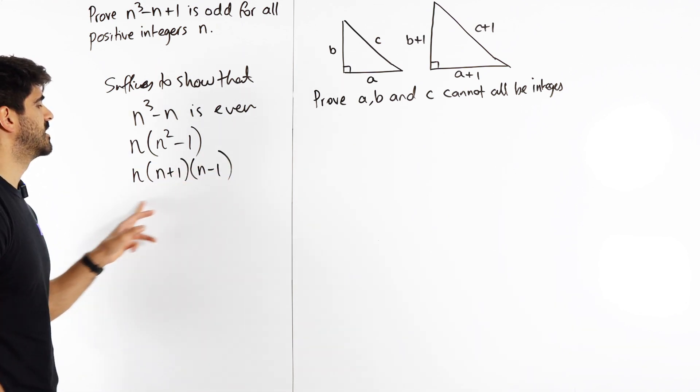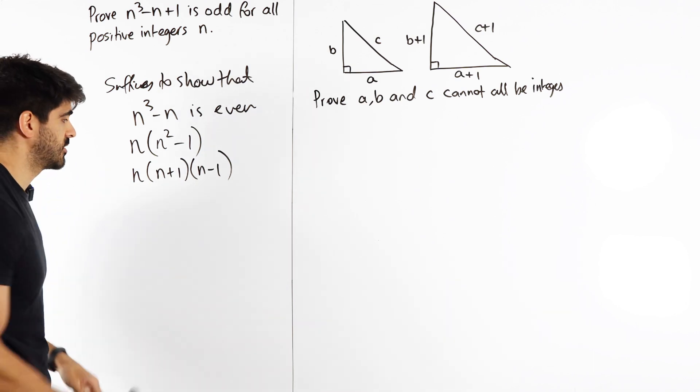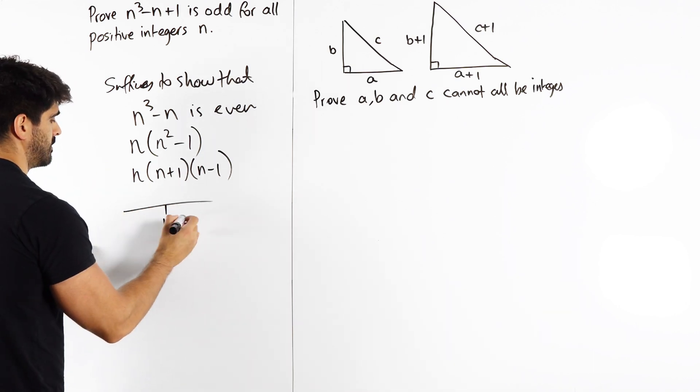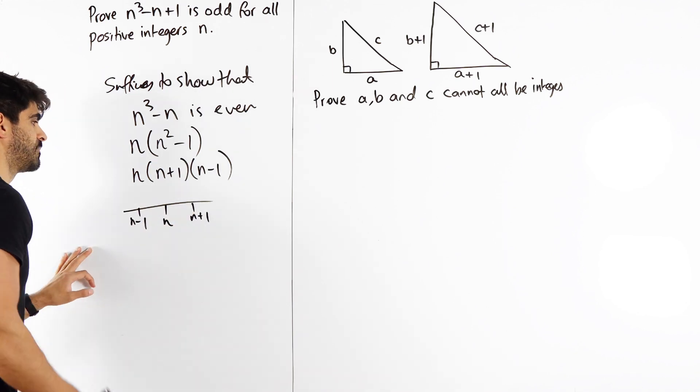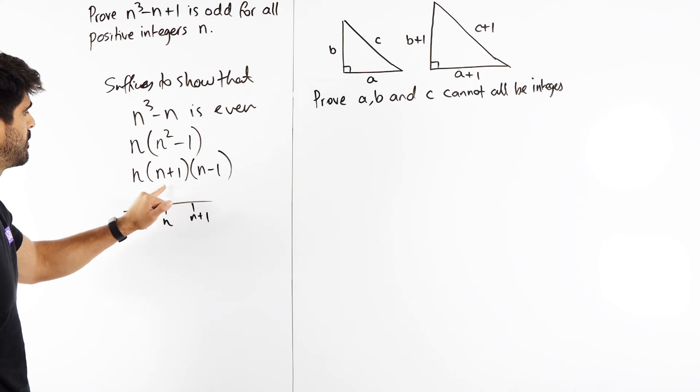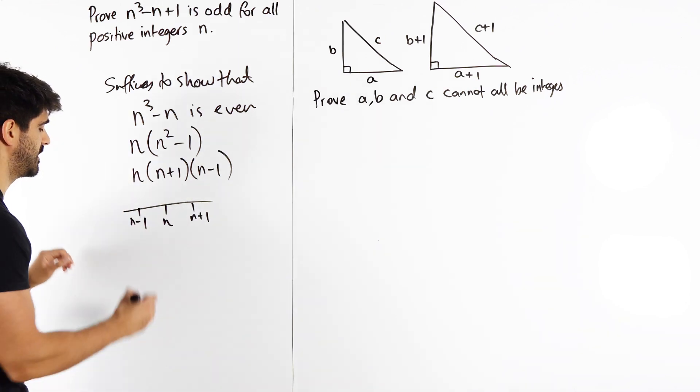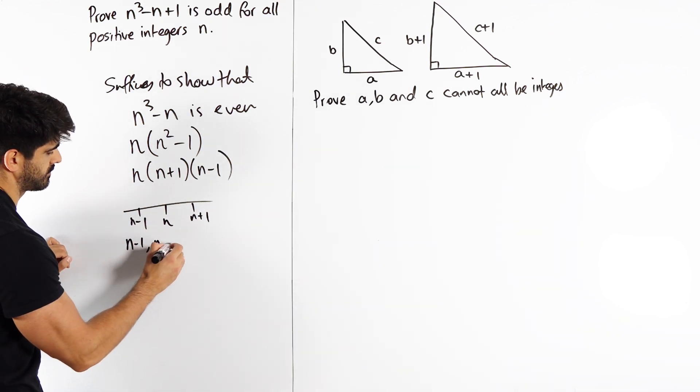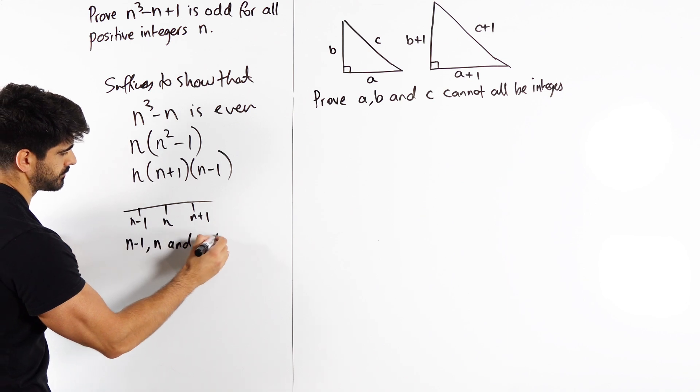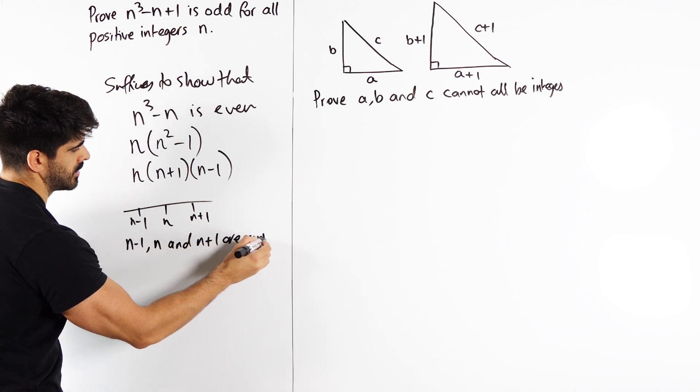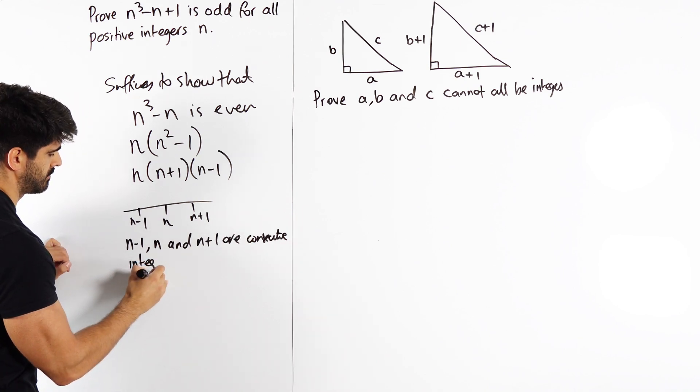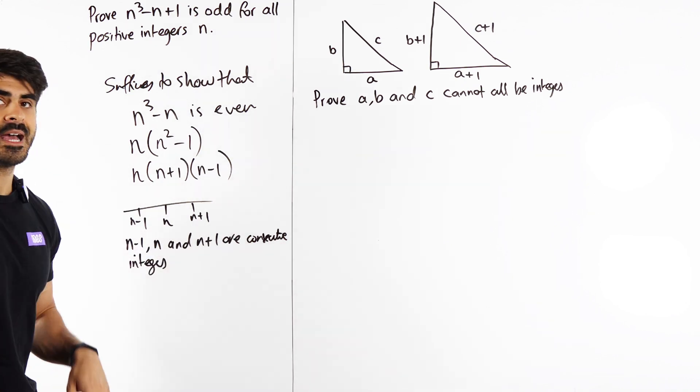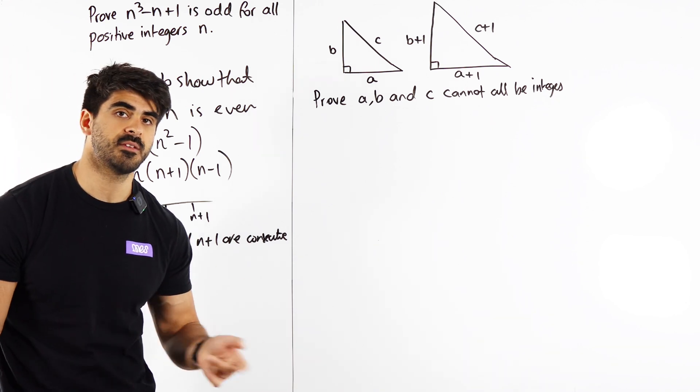Actually I've seen this before. That's consecutive integers. If you have n, here's n + 1, here's n - 1. So n, n + 1, n - 1 are all consecutive integers. But what does that mean? Well, that means then at least one of them must be even.